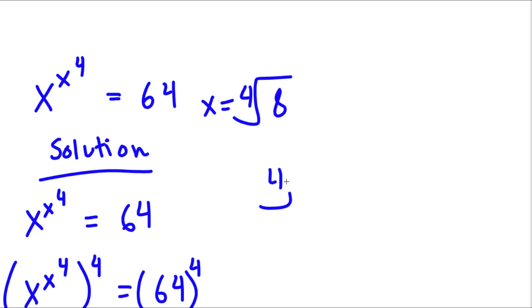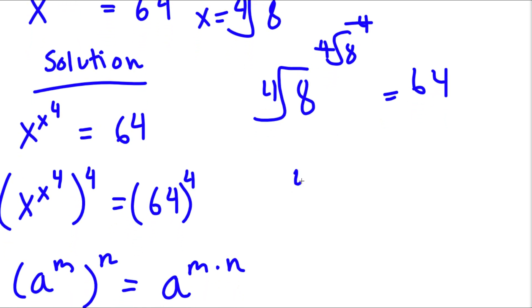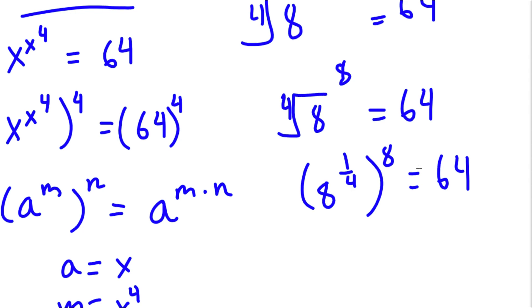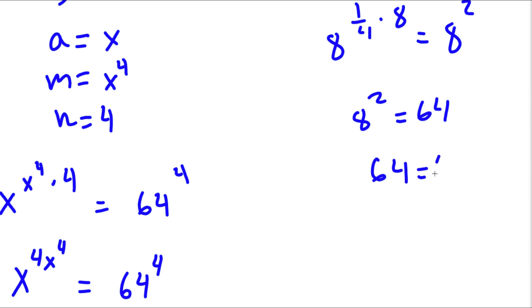Now to check our solution, if I plug in the 4th root of 8, I get the 4th root of 8 to the power of 4 is equal to 64. The 4th root of 8 to the power of 4, these two will cancel out. So I have the 4th root of 8 to the power of 8 is equal to 64. Now, the 4th root of 8 is the same thing as 8 to the power of 1 over 4. So I have 8 to the power of 1 over 4, to the power of 8, which equals 8 to the power of 1 over 4 times 8, which is 8 to the power of 2. So 8 to the power of 2 is 64, and 64 equals 64, so our solution is correct.